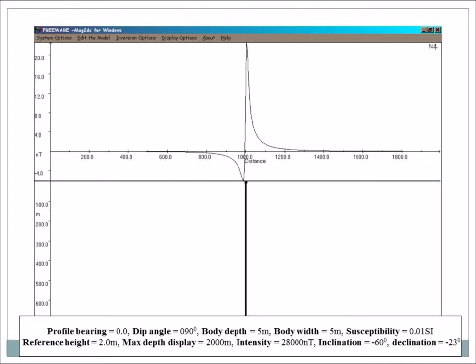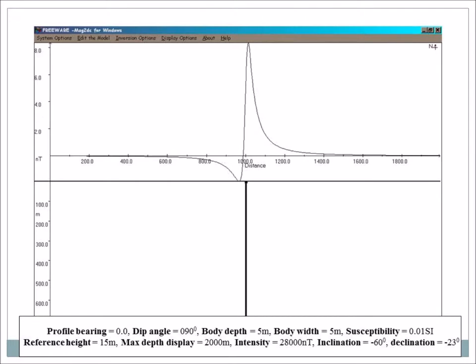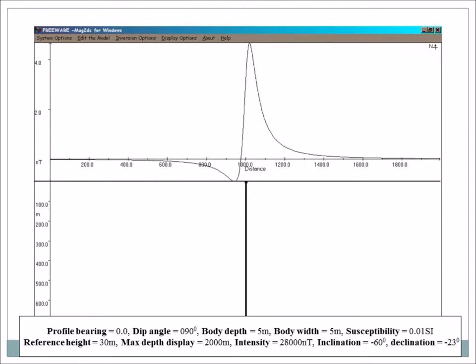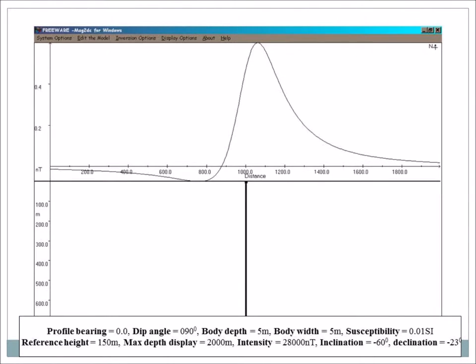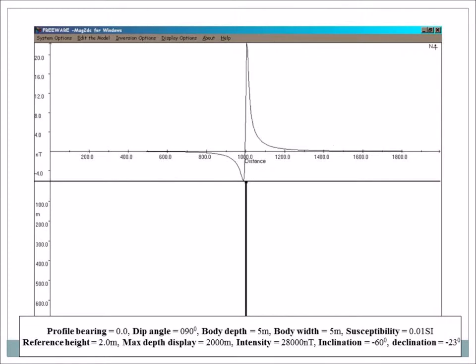So here we have 2 meters, that our magnetometer is above the ground. Here we have 15 meters, so you can see the anomaly is getting wider. So nothing's changed. The dike is still the dike, it's just at what height are you measuring. So that's 15, that's 30, 50, 80, 100, 120, 150. So you can see, this is the data you're getting in an airplane, this is the data you're getting on the ground. So you're getting a lot more information down here, and it's a lot thinner.